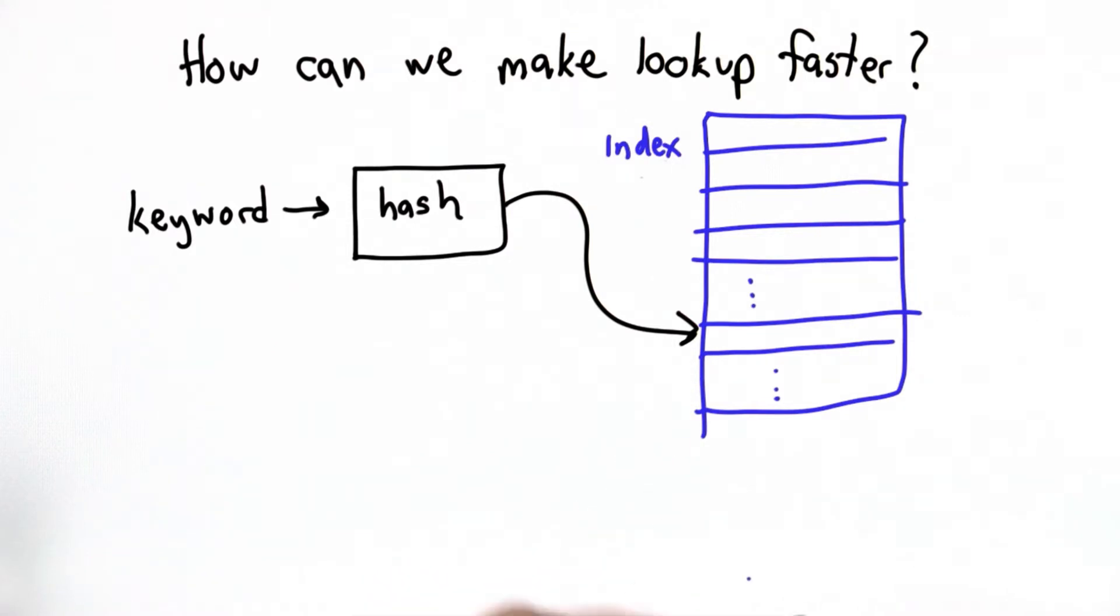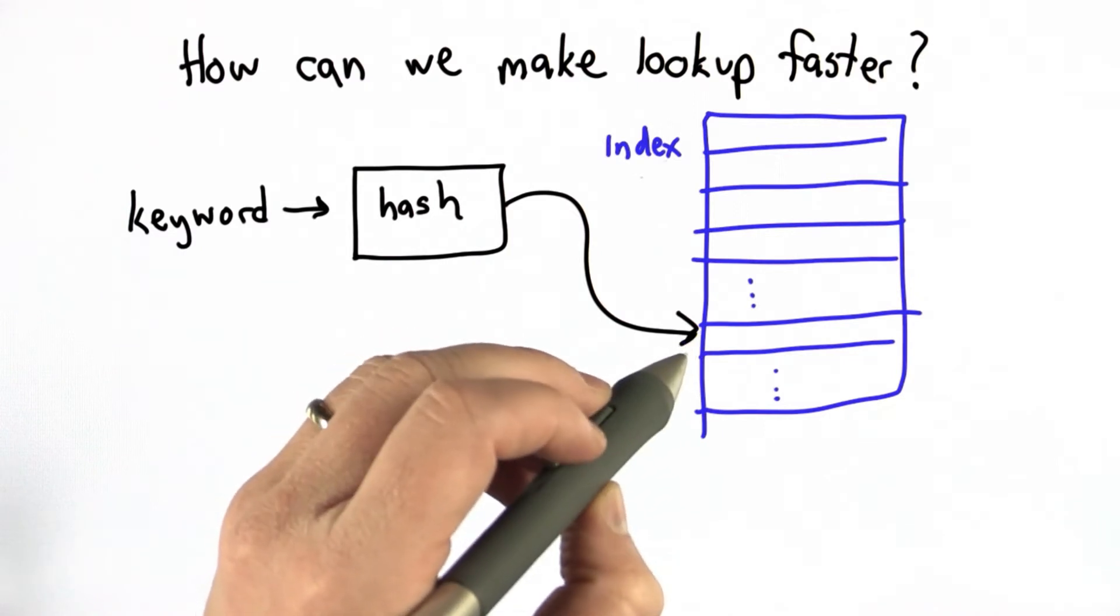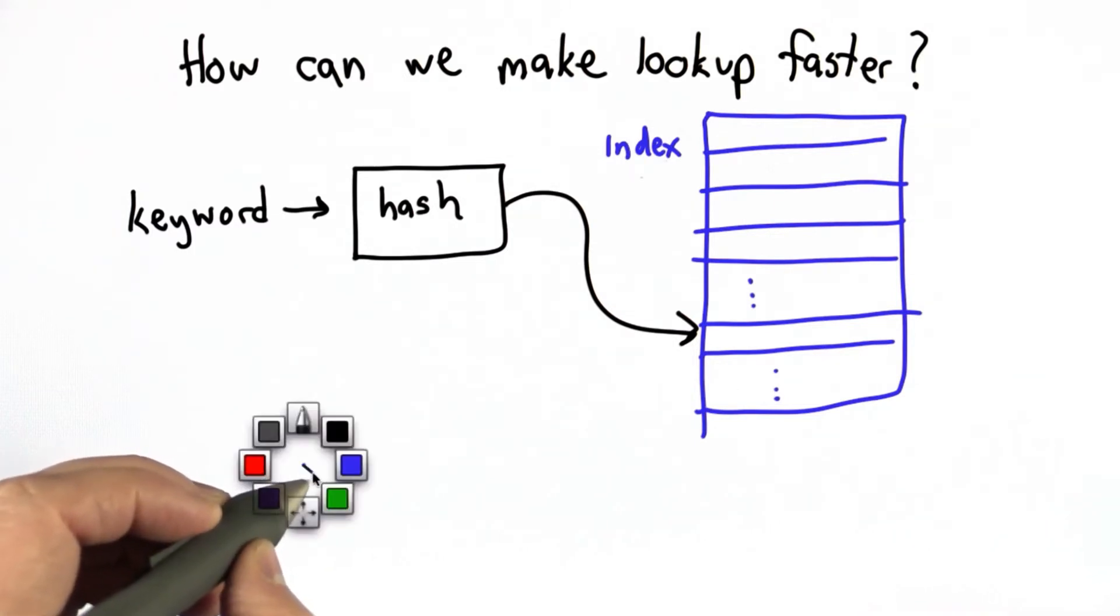So what we need for this is some function that's going to take a keyword, map it to a number, and that number is the position in the index where that entry belongs. We could do this lots of different ways. One simple thing would be to think, well, we know the alphabet. This is more like the way an index for a book would work.